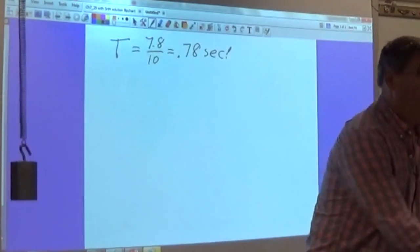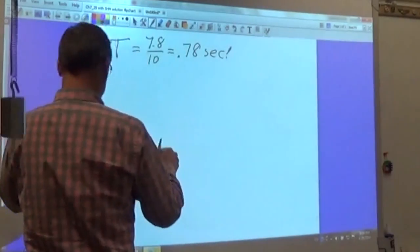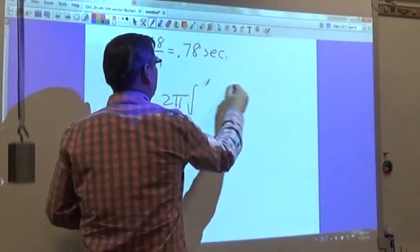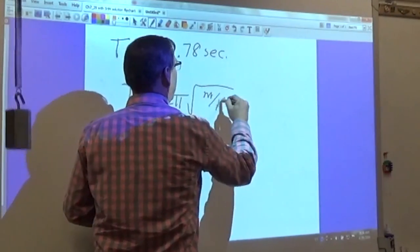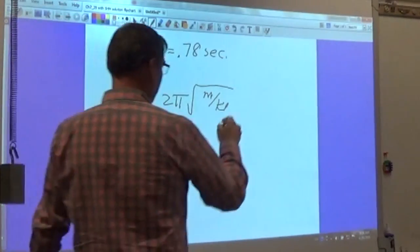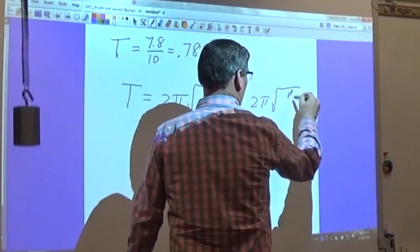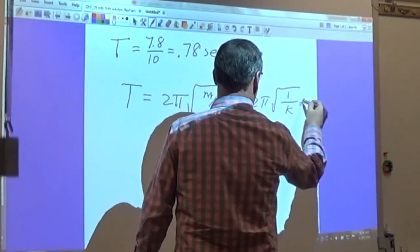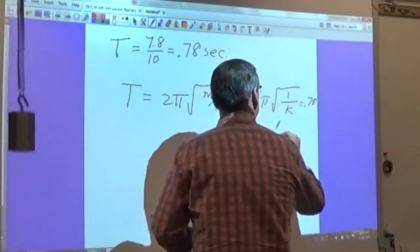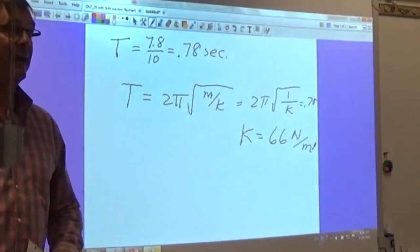So now let's take that and plug it into our equation for a period for a spring. It says T is equal to two pi times the square root of m over k. I have strategically used a one kilogram mass to make this calculation pretty simple. So two pi times the square root of one over k equals point seven eight. So that means my k constant then, sixty six newtons per meter. That's my k constant of the spring.